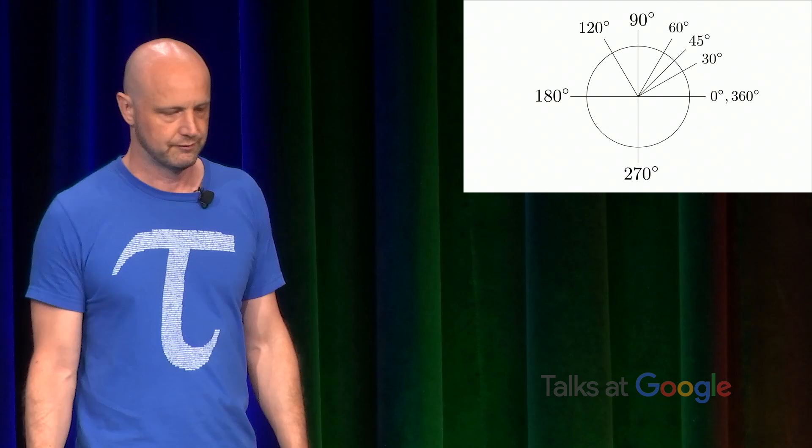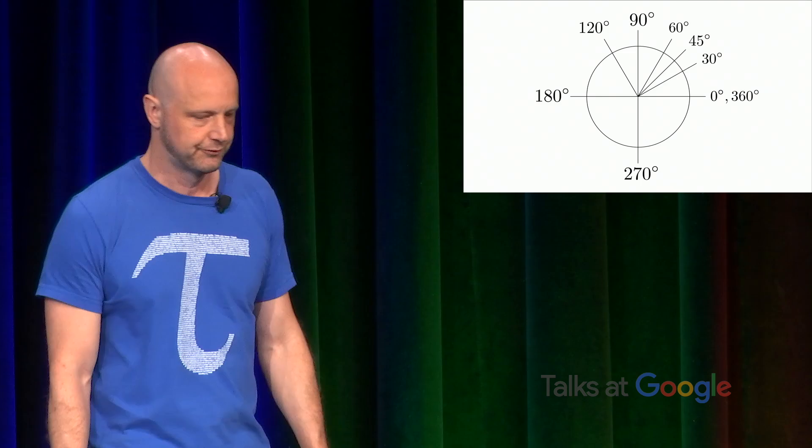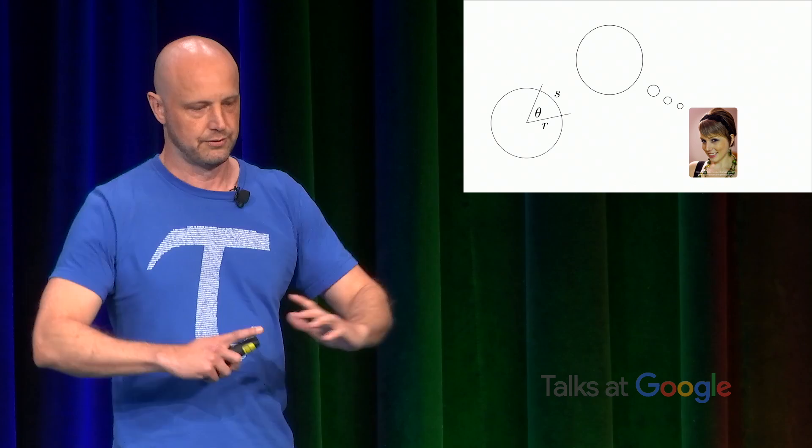But as you may know, degrees are in fact not the preferred way of measuring angles in mathematics. Instead, mathematicians prefer to use a system called radians. So in radian angle measure, what you do is you observe that the ratio of the arc length, S, to the radius is constant for all the concentric circles. And so you can define an angle theta as that ratio, S over R.